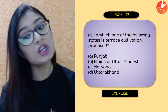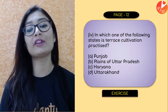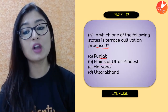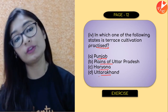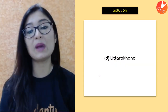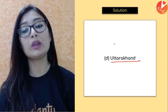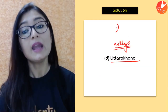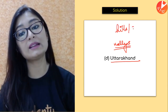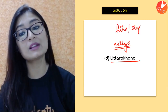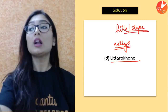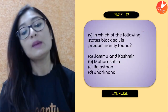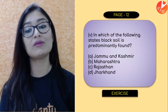Moving on: In which one of the following states is terrace cultivation practised — Punjab, plains of Uttar Pradesh, Haryana, or Uttarakhand? This is simple. Terrace cultivation is practised in hilly regions because of the slope — we need to cut terraces into the hillside. So the answer is Uttarakhand.